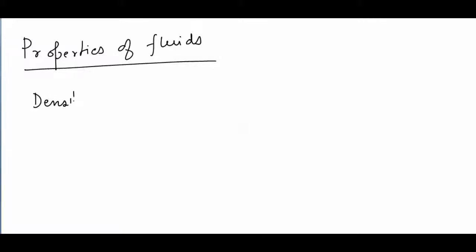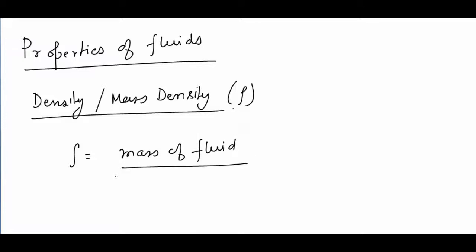As the name suggests, density or mass density is denoted by the symbol rho, where rho is mass of fluid by volume of fluid. The unit is kg per meter cube.